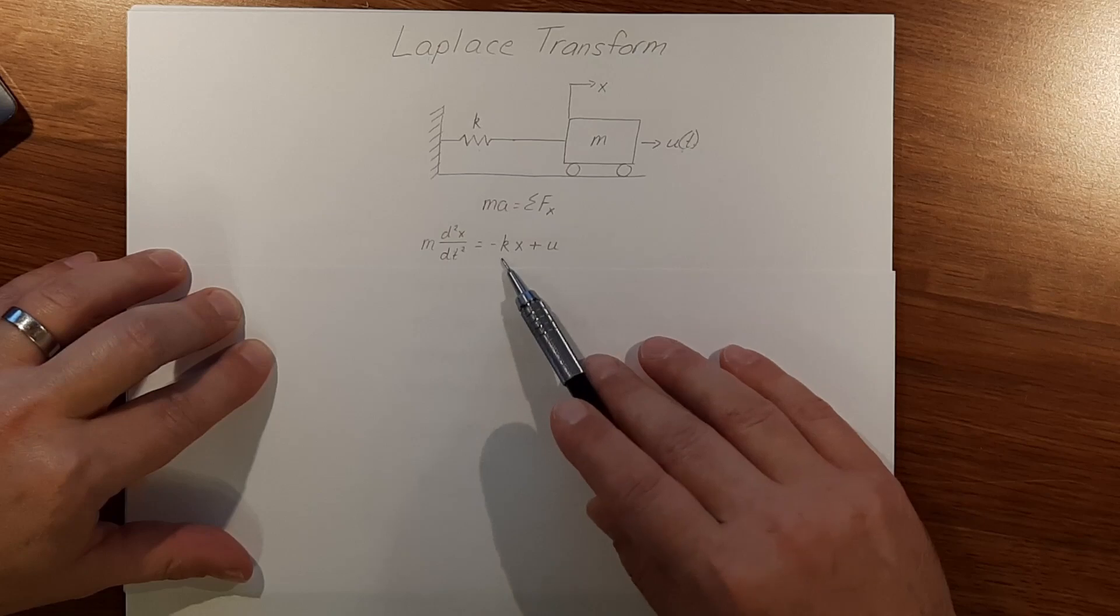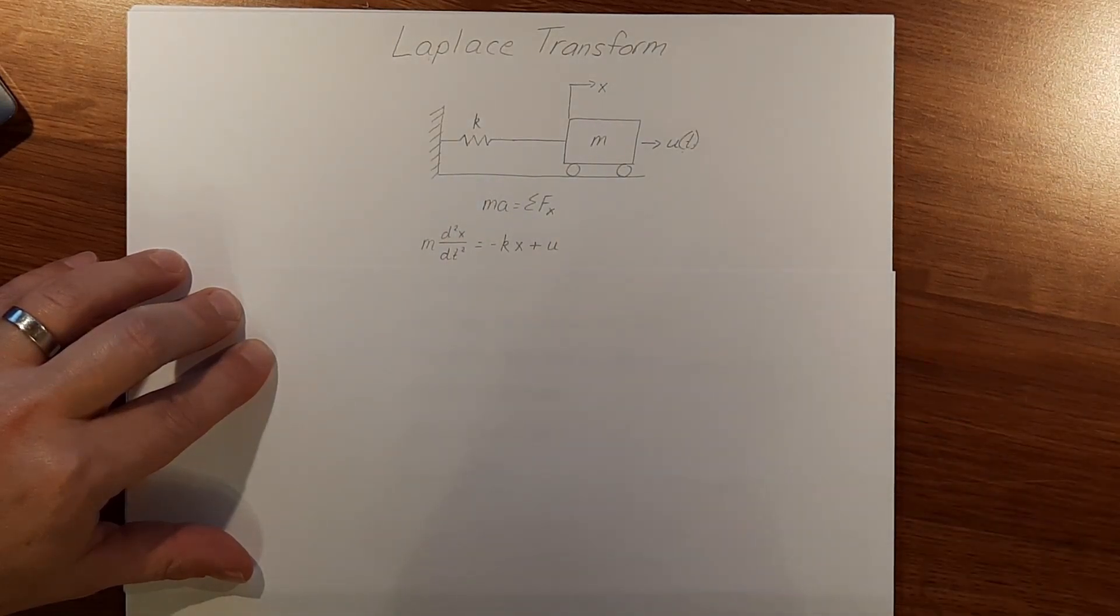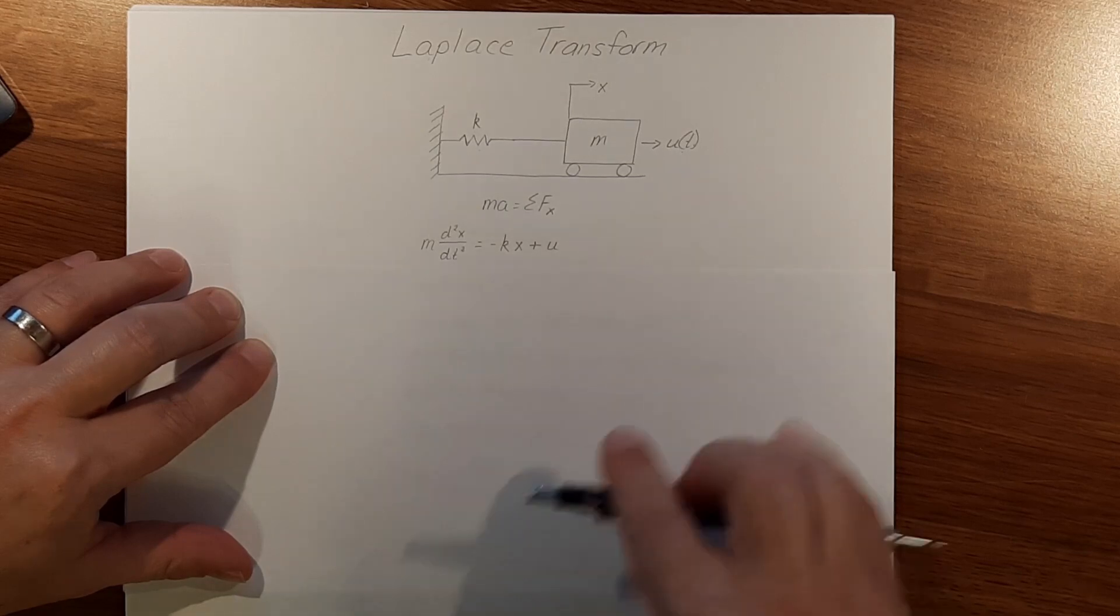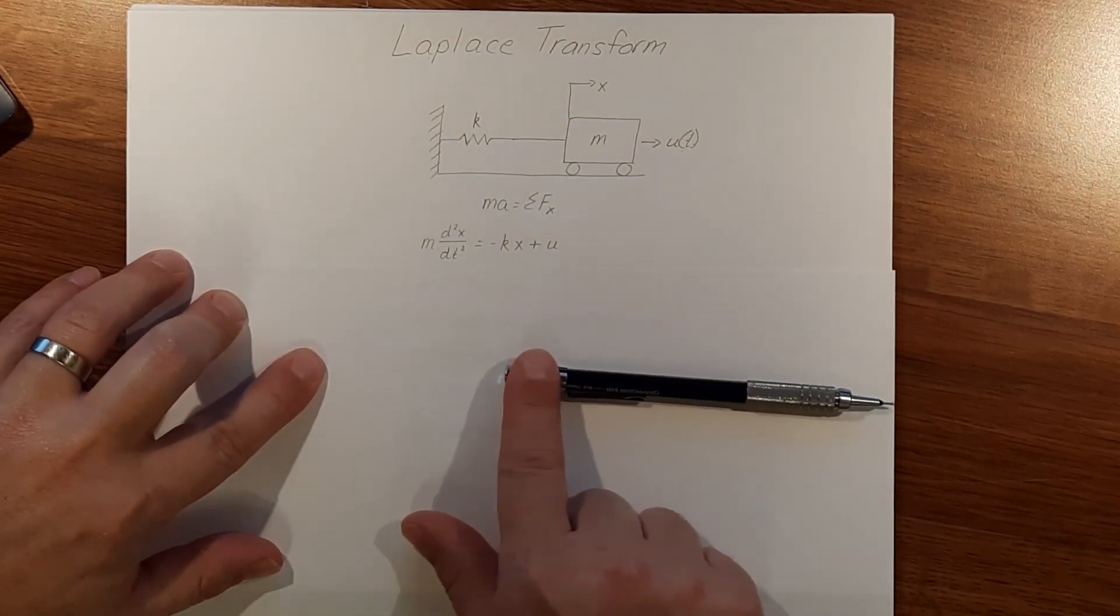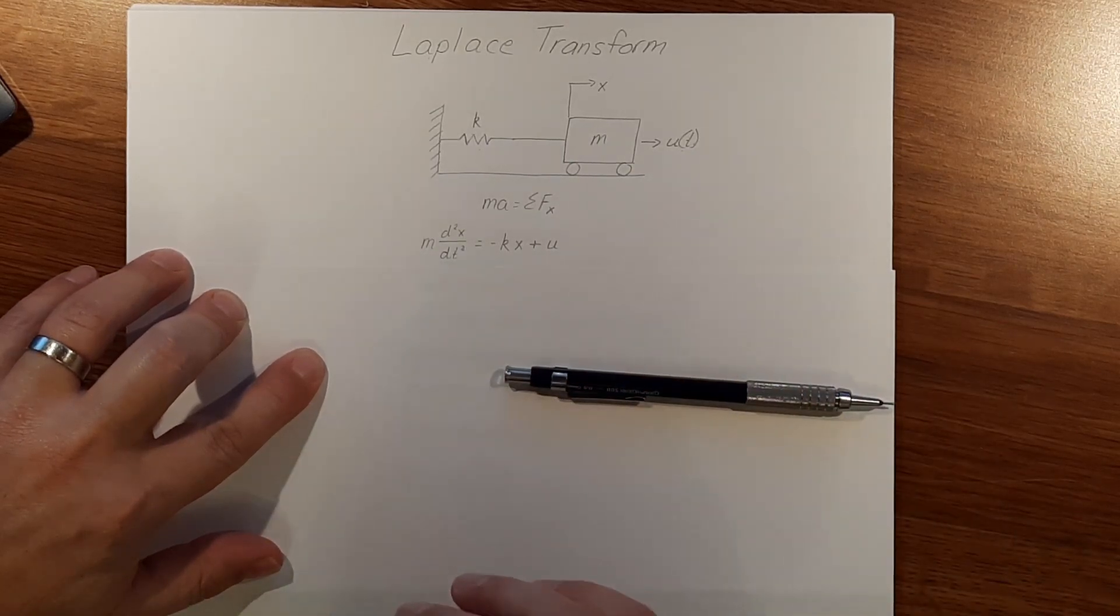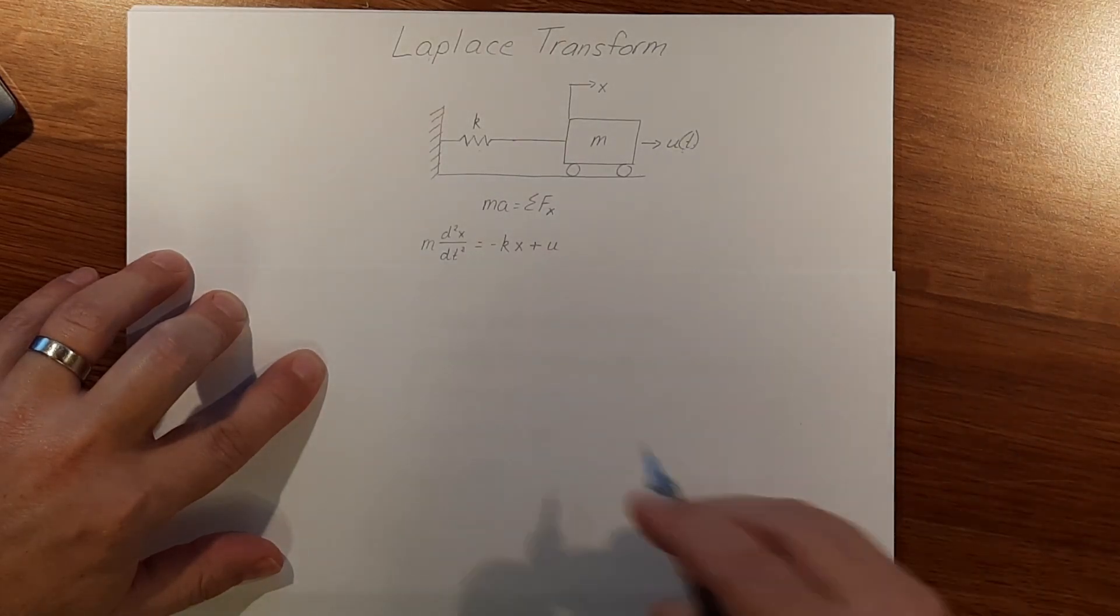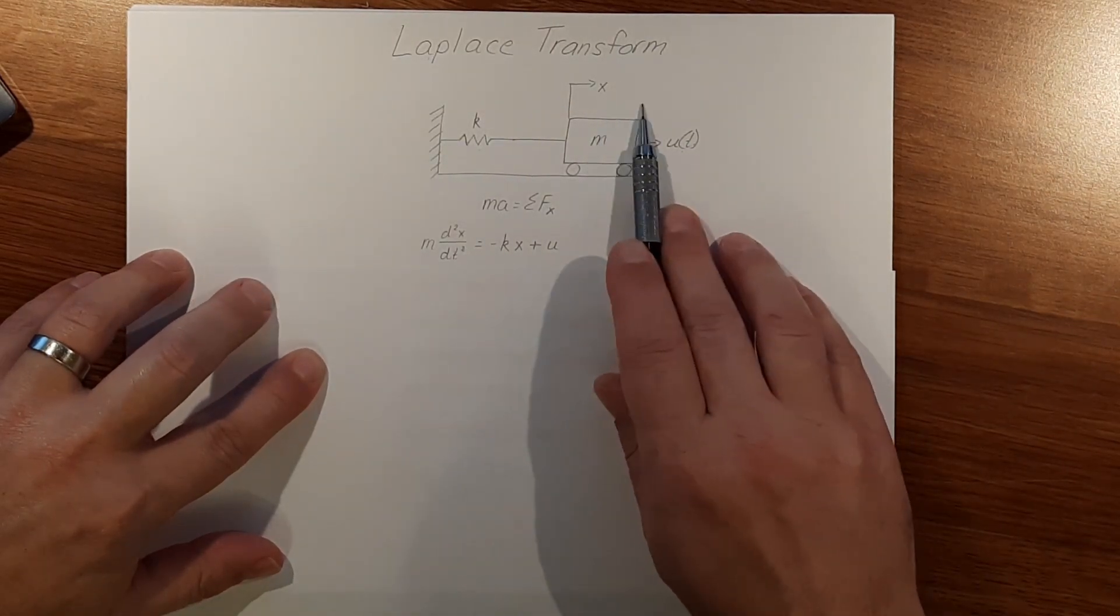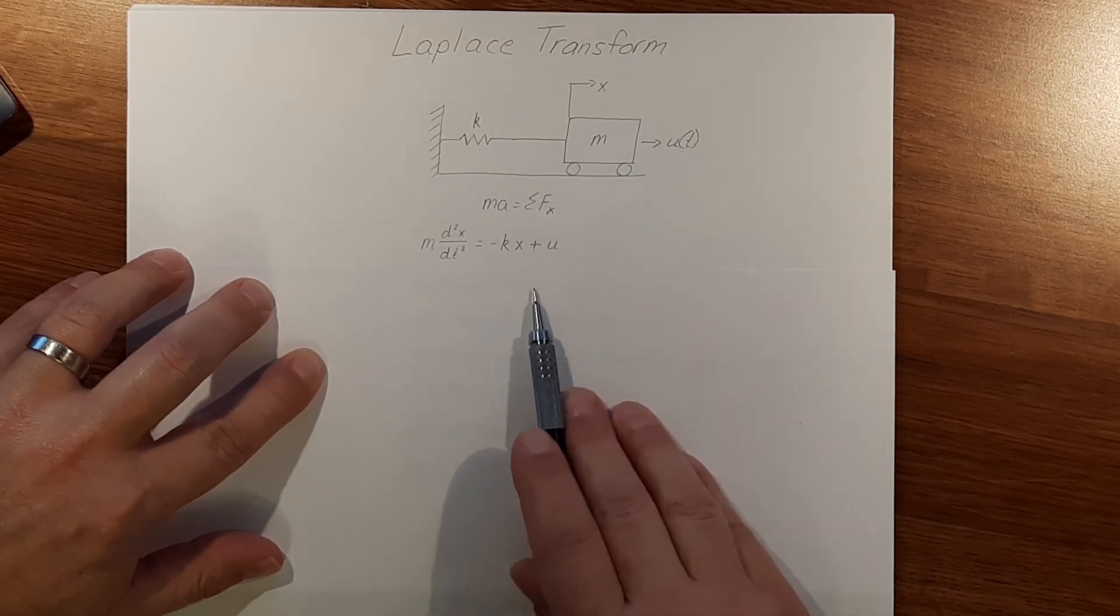We write it this way because springs have a constant that is dependent on how much it moves. If I have a spring and I pull it, the more I pull it, the more force it's going to be putting on the mass, which is why we multiply it by x. When x moves more, we have more force on the mass.